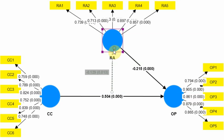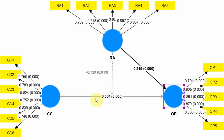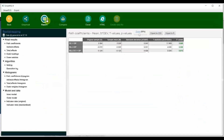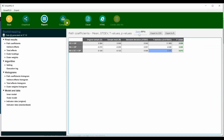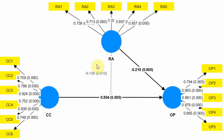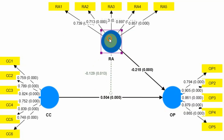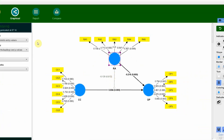My proposed hypothesis was that RA negatively moderates — that is, weakens — the relationship between CC and OP. This is confirmed: the p-value is less than 0.05 and beta is negative 0.12. Looking at the report, the interaction term is significant with a t-value greater than 1.96. In summary, role ambiguity negatively moderates the relationship between CC and OP, weakening it. However, this is not enough — I also need to look at the slope analysis.